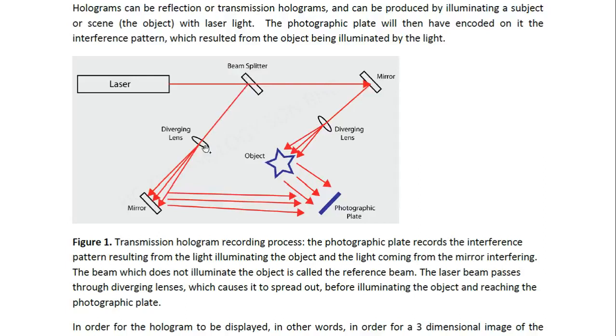It then illuminates the object and the light that then is reflected off the object is recorded onto the photographic plate at the same time that the plate is also being illuminated by the rest of the beam.